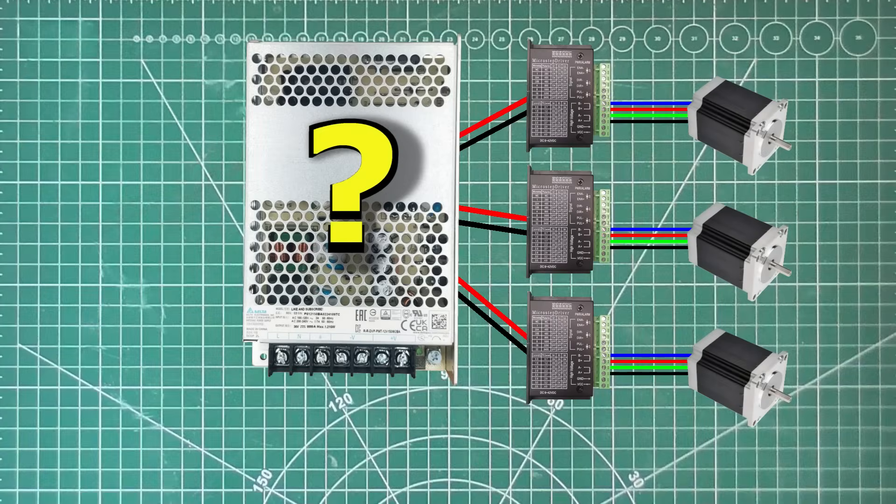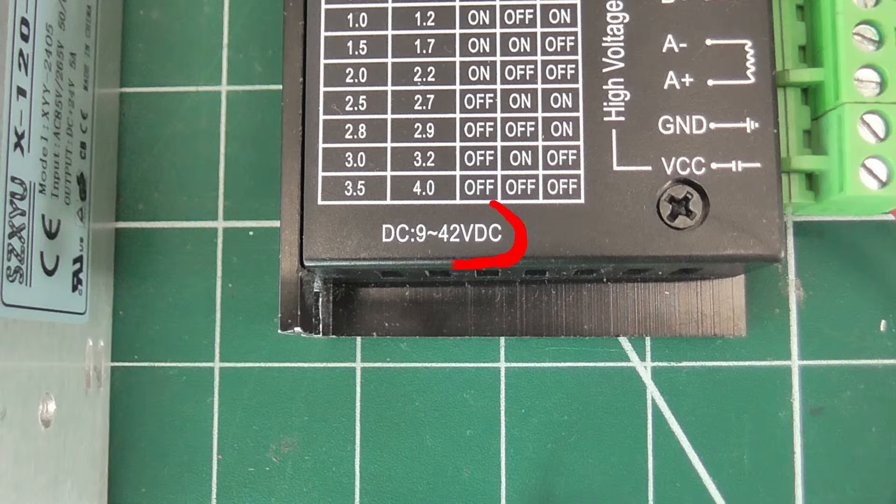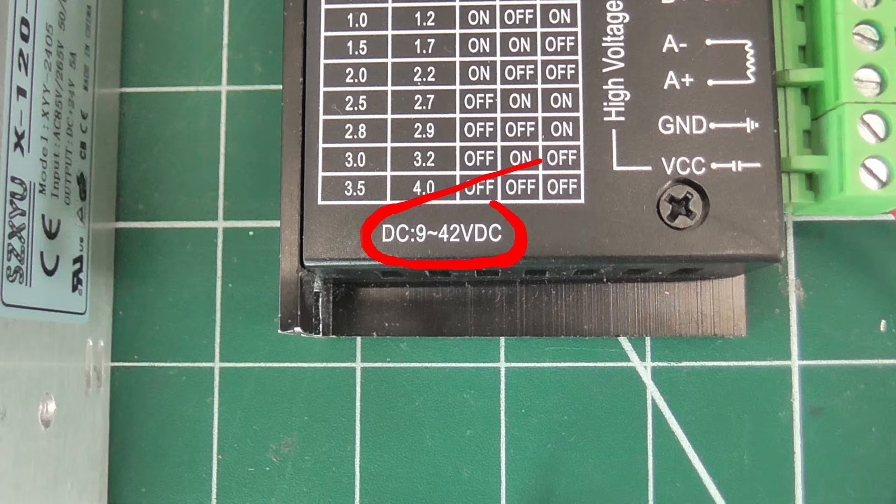The voltage is the easy part. It's written on the driver. Anything from 9 to 42 volts. More is usually better, since it allows the motor to spin faster with more torque.